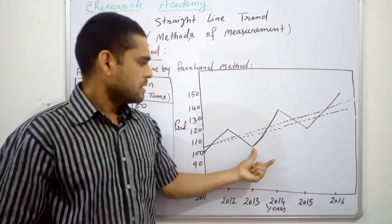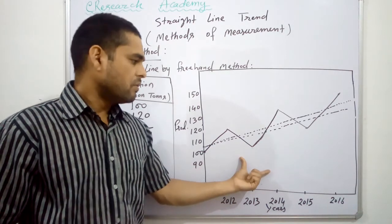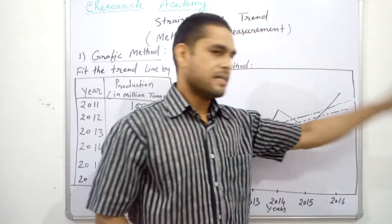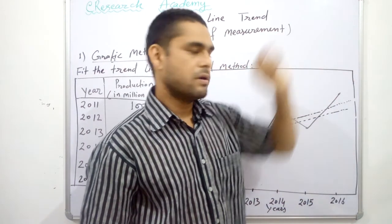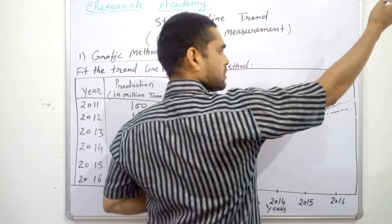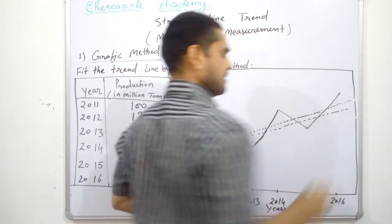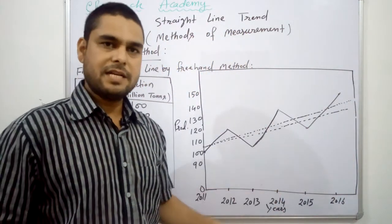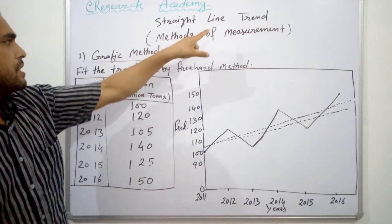So friends, by this way we predict the value for the future years, say 2019, 2020, 2025 and so on. Because we will extend this line toward these years and we can simply predict the value of these years. So this was the method of the straight line trend, the first one was the graphic method.